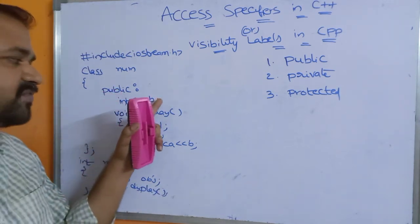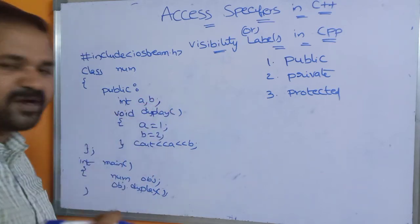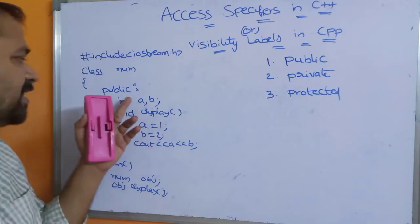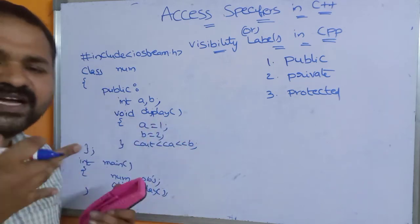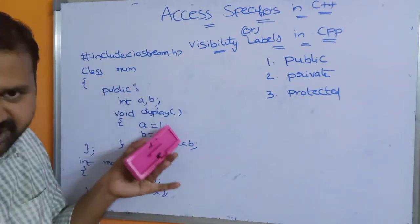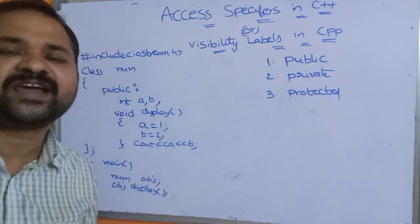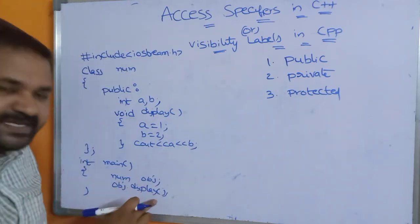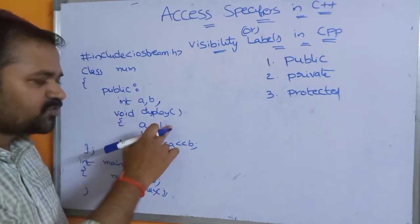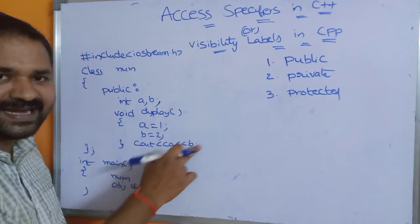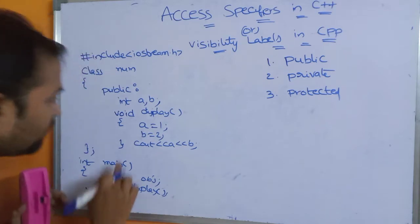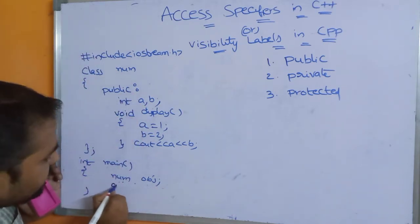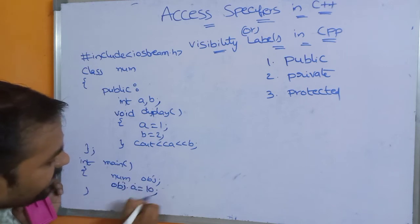Under the public section we have member variables a and b, and the display member function. We know that public members can be accessed anywhere in the program — from outside the class, from other classes, from main. So when we call obj.display, control goes to the display function, a is 1 and b is 2, so those values will be printed. We can also directly access those members — for example, obj.a = 10 and obj.b = 20.